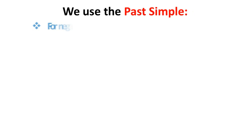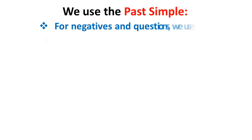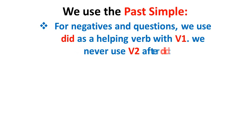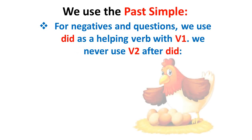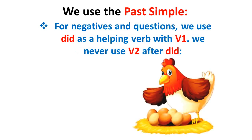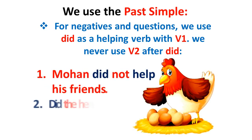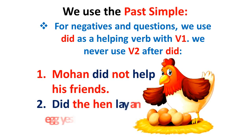We use the Past Simple for negatives and questions. We use DID as a helping verb with V1 — we never use V2 after DID. For example: Mohan did not help his friends. Did the hen lay an egg yesterday?